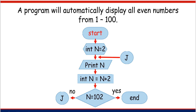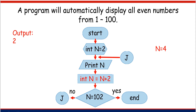Let's see how this flowchart works. Start. Next, the initialization symbol: int n is equal to 2, so the value of n is 2. Then print n — the output is 2. Now we are on the process symbol: int n is equal to n plus 2. The previous value of n is 2, and 2 plus 2 is equal to 4, so the new value of n is 4.